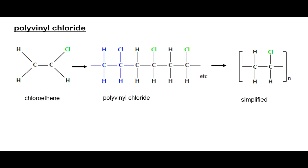Another example is polyvinyl chloride, which we know as PVC. PVC plastic is used in many everyday items — for example plastic chairs, vinyl tiles, etc. The monomer used to make PVC is the chloroethene molecule. When PVC forms, the repeating unit consists of two carbons with hydrogens on three attachments and chlorine on one attachment.